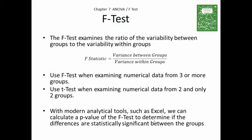The f-test examines the ratio of the variability between groups to the variability within groups. It's looking for variance, which is very closely related to standard deviation — for a simple sample, variance is standard deviation squared. So the f-test is looking at the variance between the groups, comparing it to the variance within the samples — sample A, sample B, and sample C.